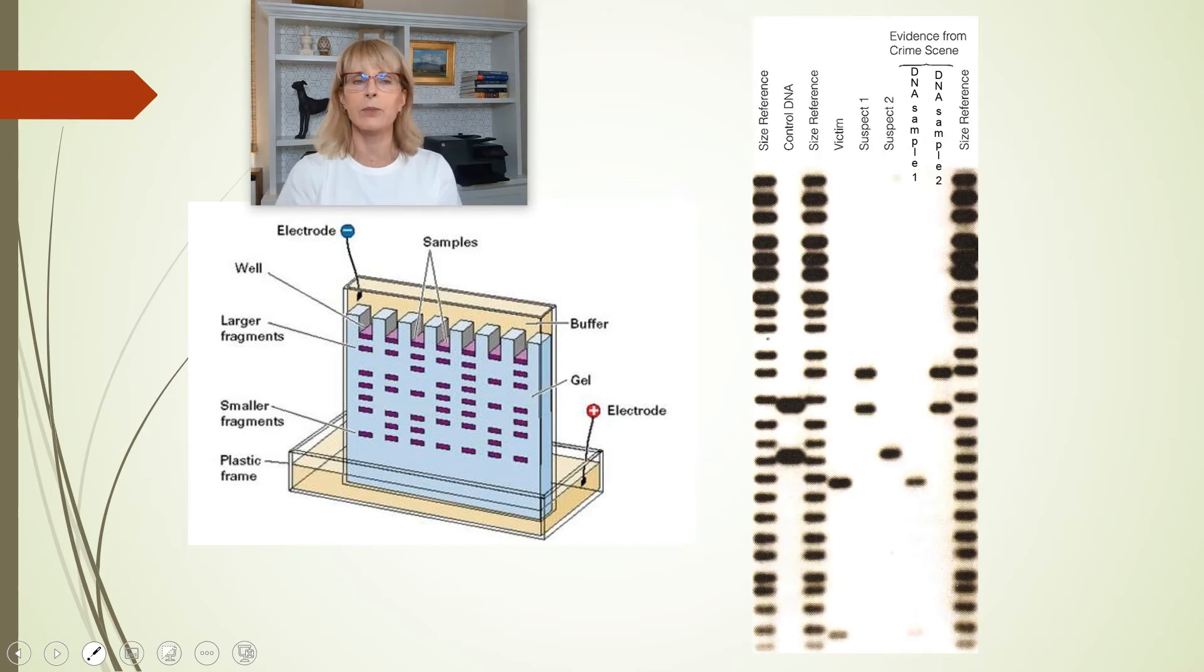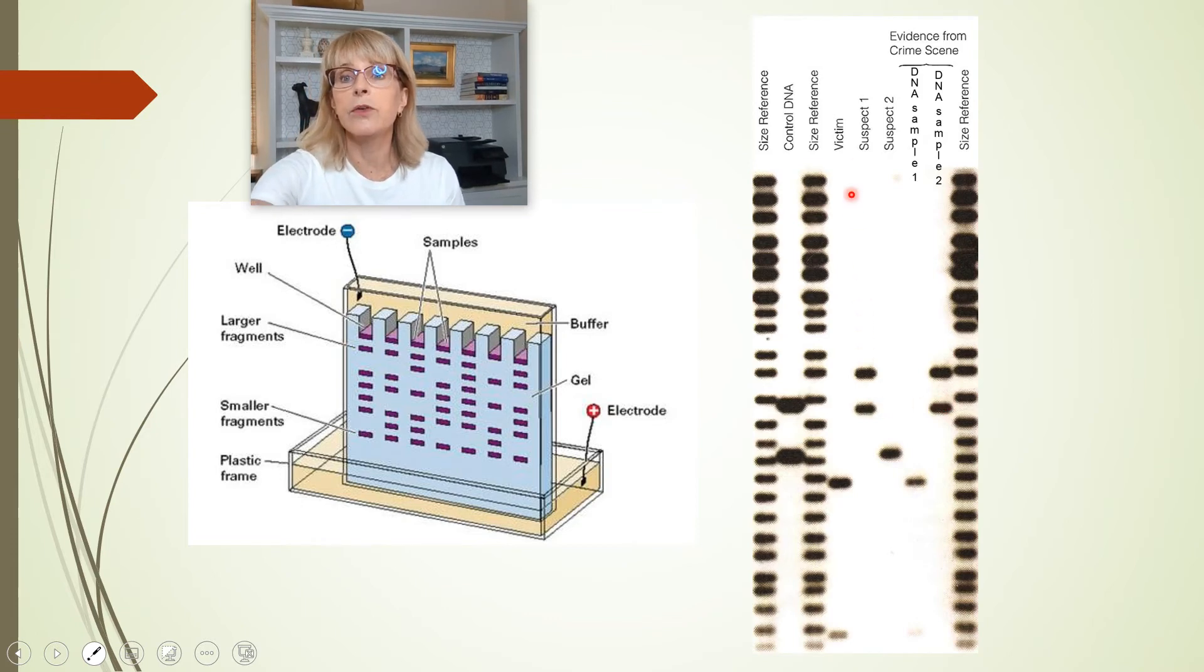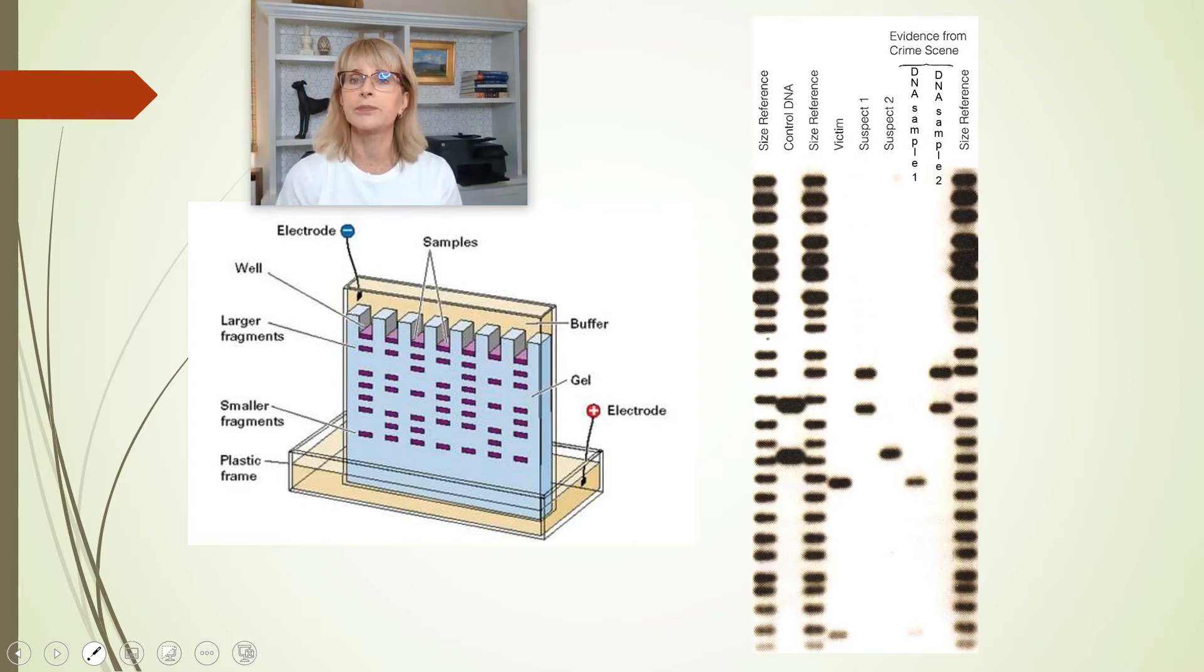Do we know that it's DNA from the victim yet? Not yet. DNA sample number two, well, it is compatible with the DNA from suspect number one. It is compatible with, do we know that it is suspect number one's DNA? No, we don't know that it is his or her DNA.